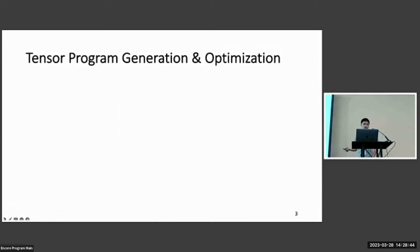There are different ways to generate and optimize our tensor programs. For example, we can manually write the tensor program, such as in the vendor libraries. However, it's very time consuming and engineering heavy to do this because we need to optimize the performance for different operators, different input sizes, and different hardware.